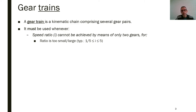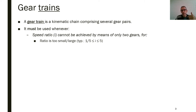Instead of using only a pair of gears, we will use a gear train with more than a pair when either the speed ratio is larger than a maximum allowed number — normally 5, sometimes between 5 and 7. Of course, this has two ways of looking at the ratio: from input to output and from output to input. That's the reason for defining the maximum and minimum ratio as one-fifth or 5.